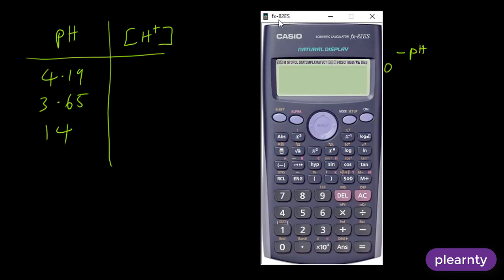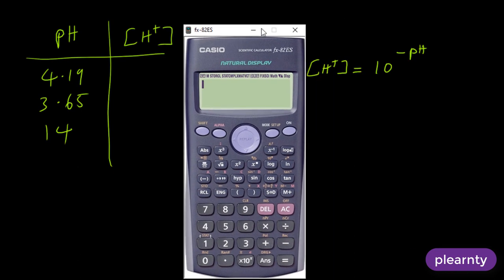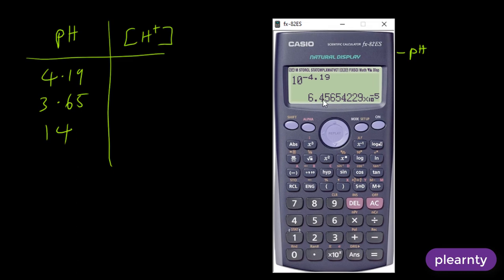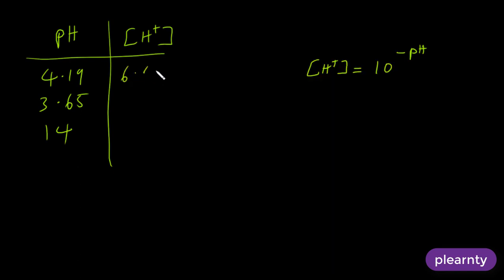So for 4.19, you just say 10 raised to power minus 4.19. Boom. This is 6.45 times 10 raised to power minus 5. Or let's say 6.46 approximately. 6.46 times 10 raised to power minus 5.